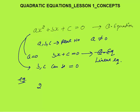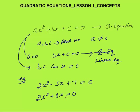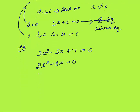For example, 2x² - 5x + 7 = 0 is a quadratic equation because the highest power of x is 2. Also, 2x² + 8x = 0 is a quadratic equation where c is zero — the constant term is not there. And 5x² = 0 is also a quadratic equation where both b and c are zero. These are all examples of quadratic equations.